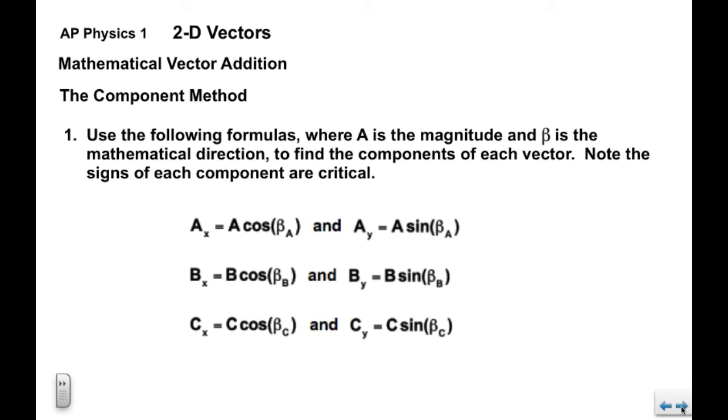Now we're going to use the following formulas, where for vector a, a is the magnitude of the vector and beta sub a is the mathematical direction of vector a. So for the x components, a sub x equals a cosine beta sub a, and for the y component, a sub y equals a sine beta sub a.